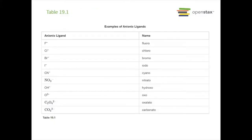Here are some examples of anionic ligand names: F⁻ is fluoro, NO3⁻ is nitrato, OH⁻ is hydroxo, O2²⁻ is oxo, oxalate becomes oxalato, carbonate becomes carbonato. Hopefully you can have some fun with these names.